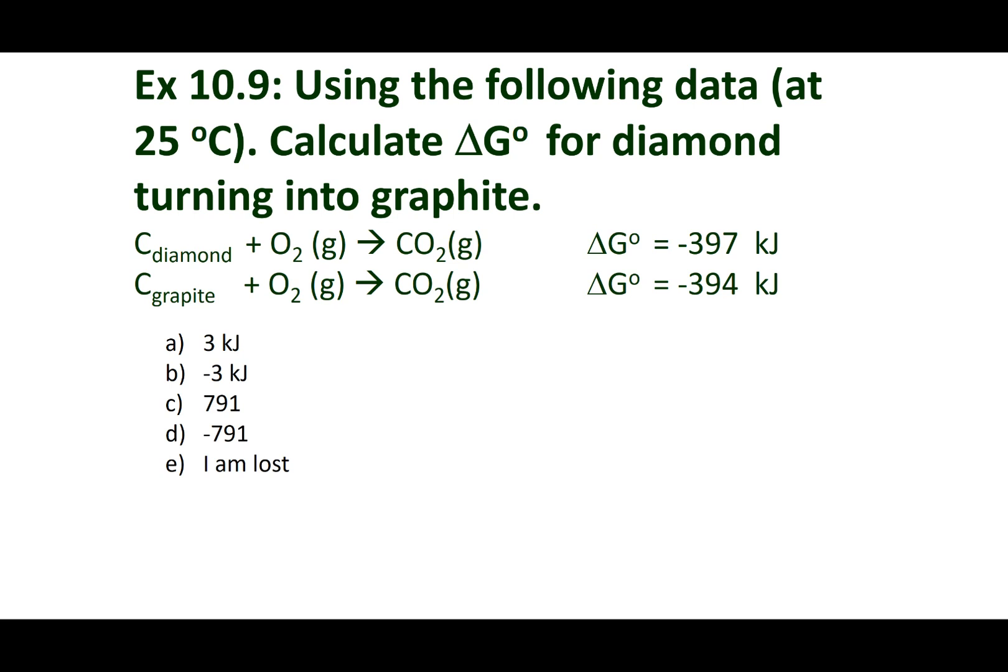All right, gentle people, the first thing I want you to understand is this top reaction right here is not a formation reaction. You don't see a delta GF here, and C diamond is not the elemental form of carbon. Now, technically speaking, the second reaction is a formation reaction of CO2 because I have carbon in its elemental form, graphite. But what I really want to drive home is you cannot do products minus reactants because you don't have formation reactions for both of these reactions.